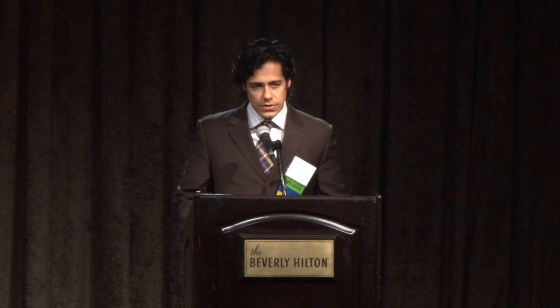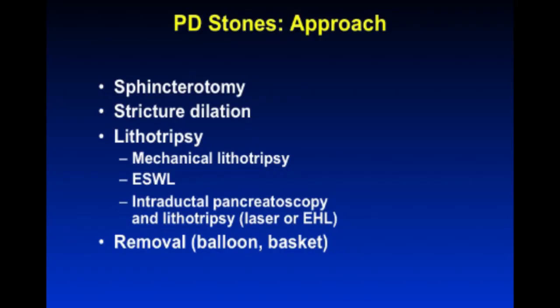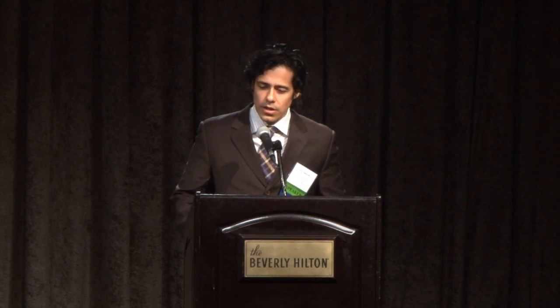The technique for stone removal usually involves a sphincterotomy large enough to pull the stone out, stricture dilation, and often some kind of lithotripsy for larger stones — either mechanical, ESWL, or intraductal. Mechanical lithotripsy hasn't been used much due to concern about getting stuck with harder stones. Removal is then done with a balloon or basket; a basket may be more effective because a balloon tends to redirect fragments into dilated side branches during sweeping.